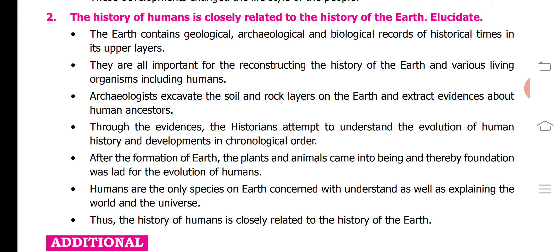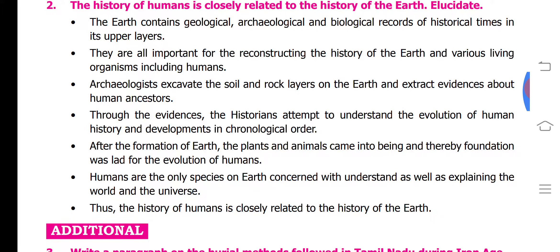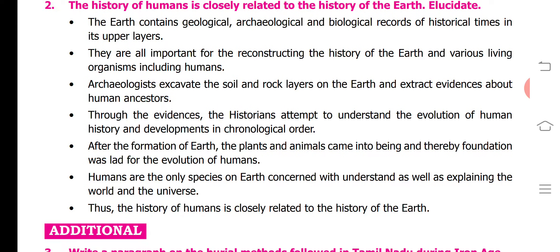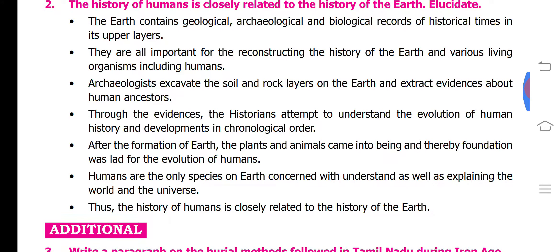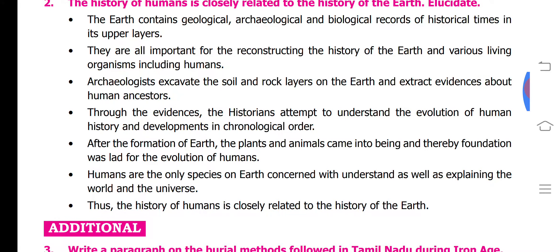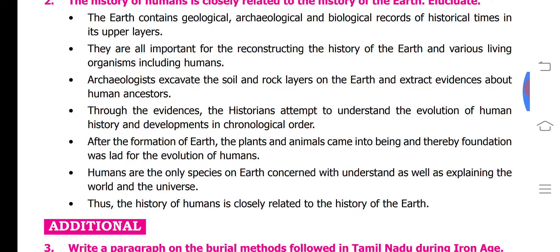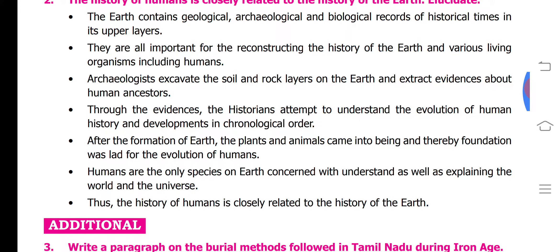The earth contains geological, ecological, and biological records of historical times in its upper layer. By geological means, the layers of the earth — soils and rocks — are evidence of historical times, because historical peoples made many statues on rocks and had many writings on rocks, leaving all this evidence.